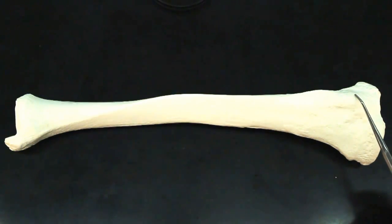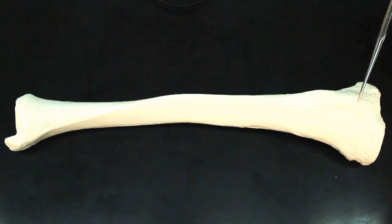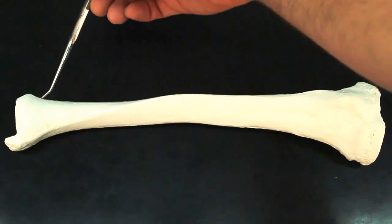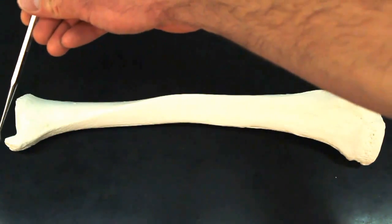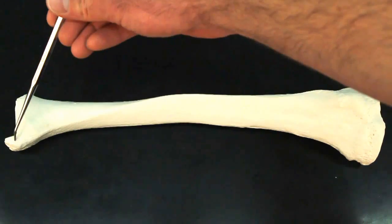Now, if you go down from the tibial tuberosity, you go down to the distal end of the bone. You can see this protrusion right here sticking off. This is the medial malleolus.